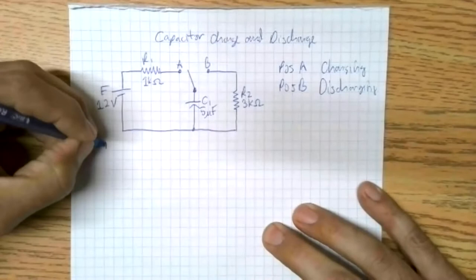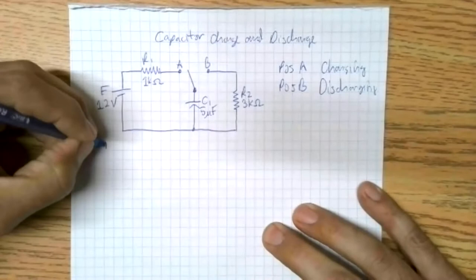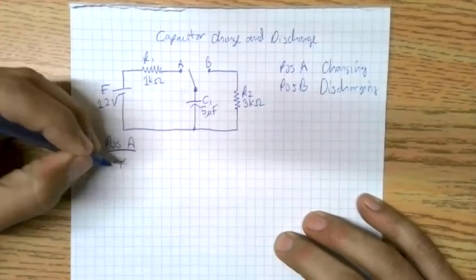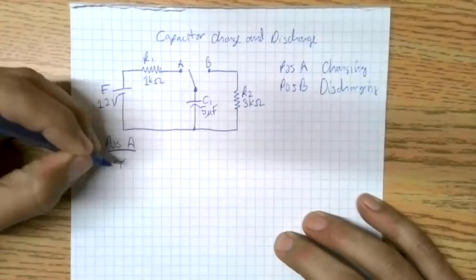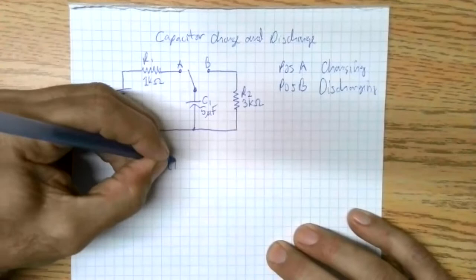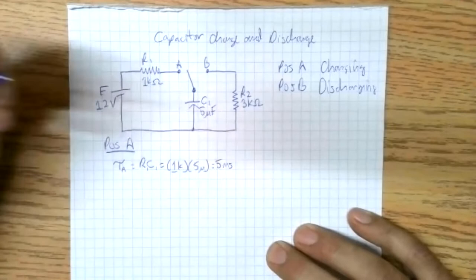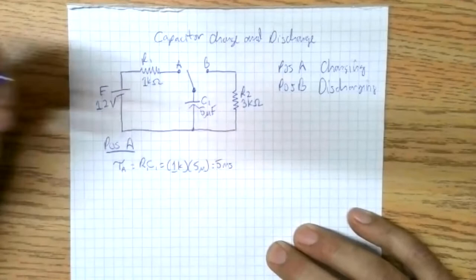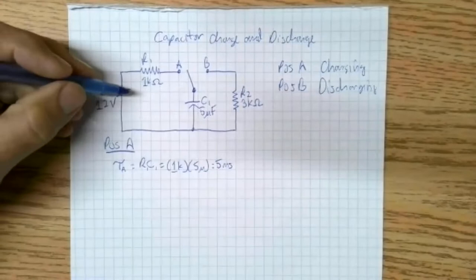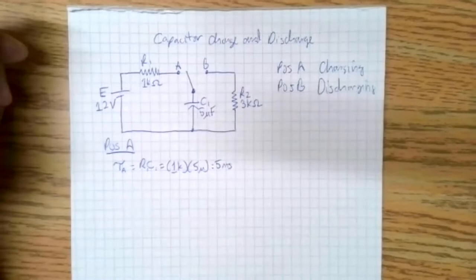Let's go into position A, where we're charging. In position A, this is our loop. We need to calculate our time constant — that is tau in position A, and that is R times C, or R1 times C1 to be more precise. That is 1k times 5 micro, which gives us 5 milliseconds. Tau is 5 milliseconds. It takes 5 time constants to charge this capacitor to almost E — like 99% of E.